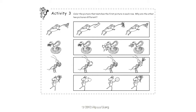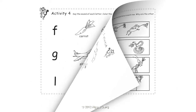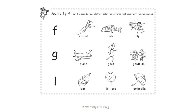The pictures of a goat eating a pear and a goat eating a cookie don't match. Activity 4. Say the sound of each letter.